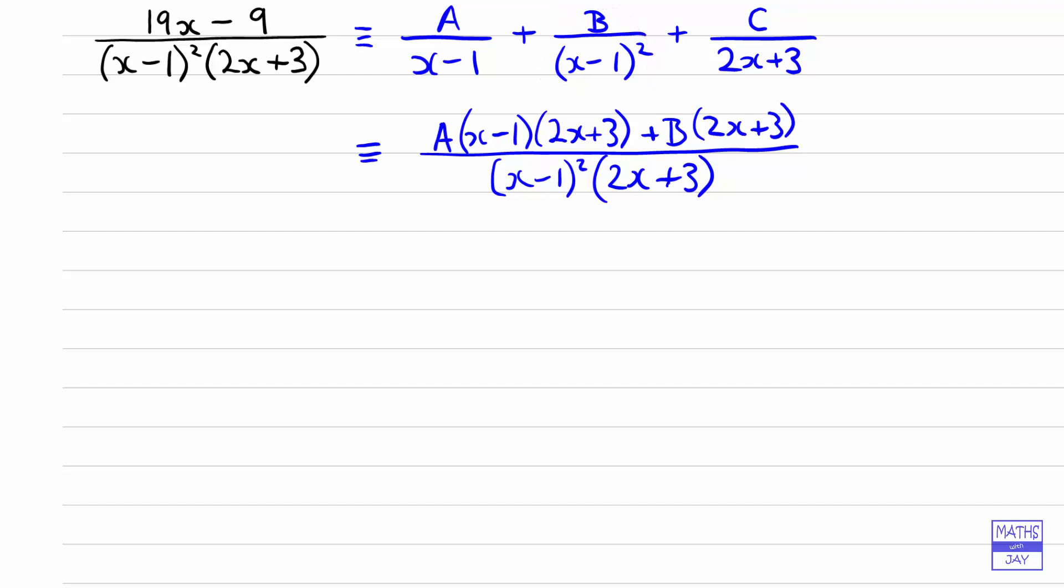And then the 2x plus 3, we've multiplied by x minus 1 squared, so that's what C has to be multiplied by.